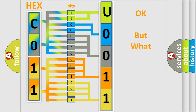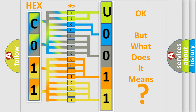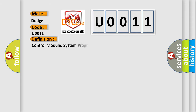The number itself does not make sense to us if we cannot assign information about what it actually expresses. So, what does the Diagnostic Trouble Code U0011 interpret specifically for Dodge car manufacturers?